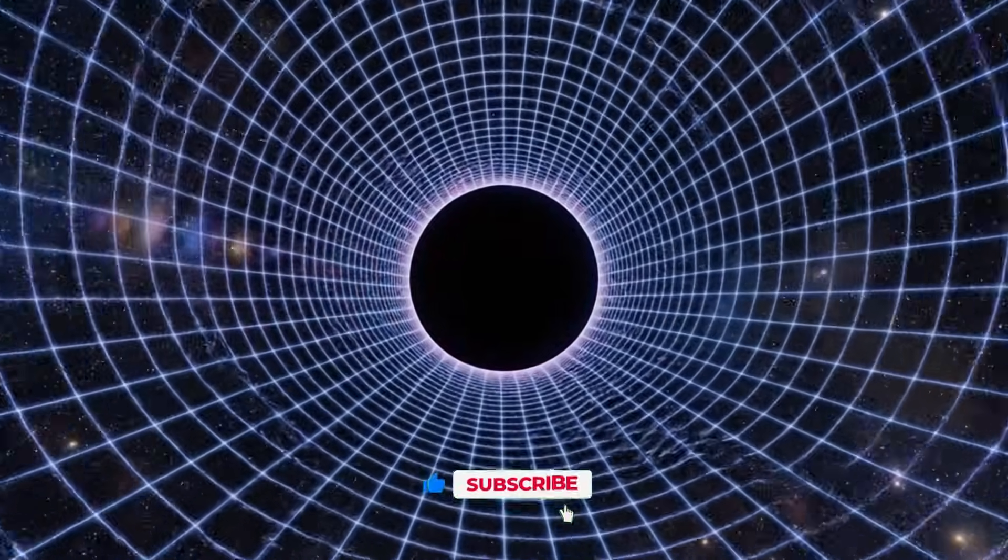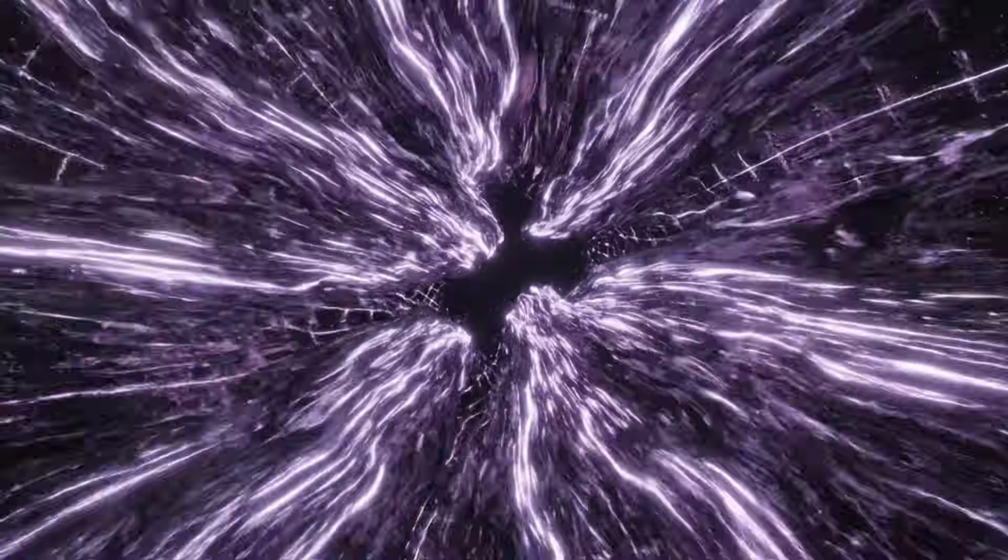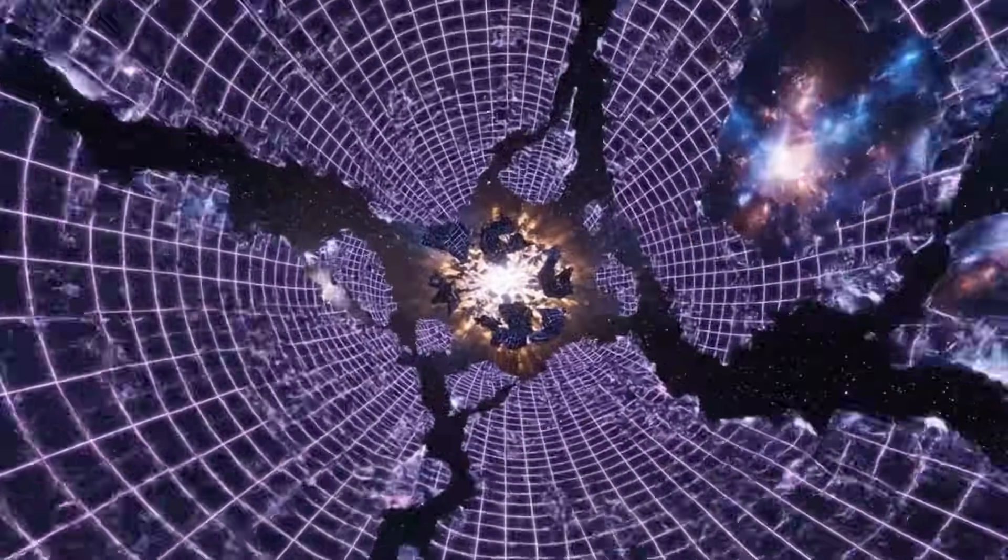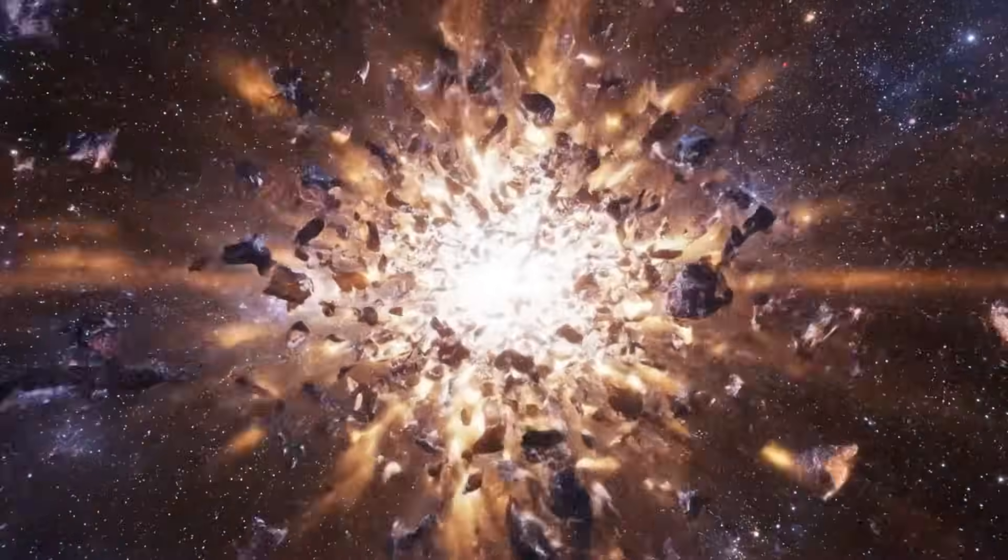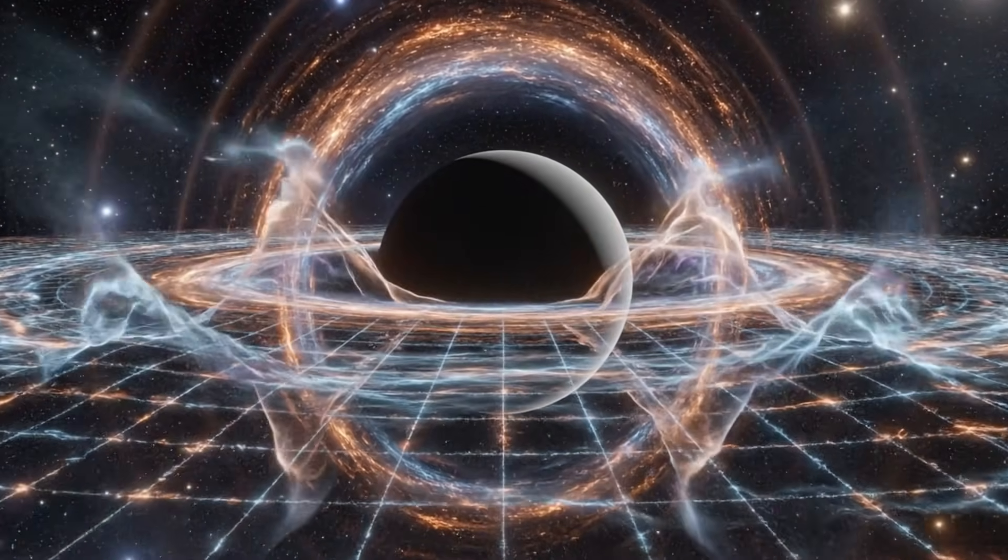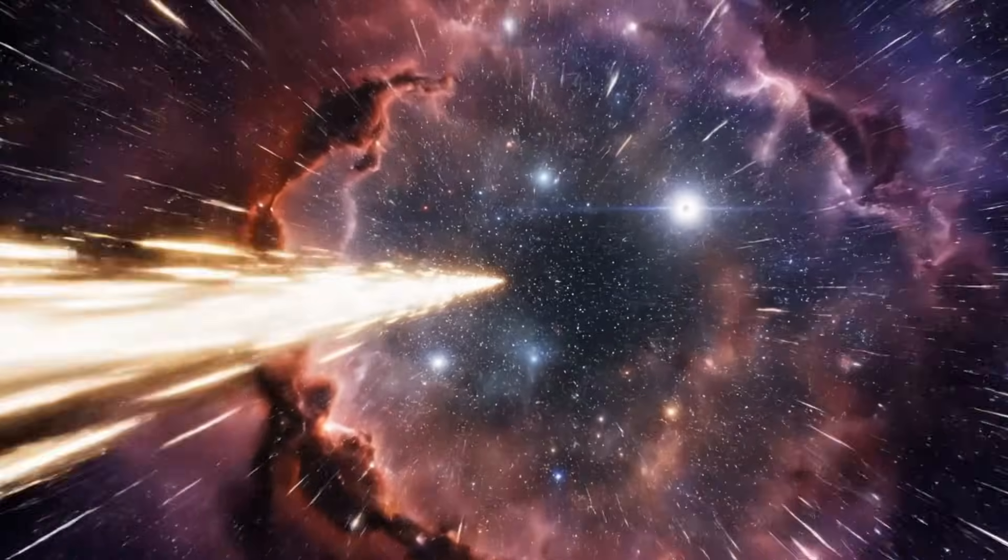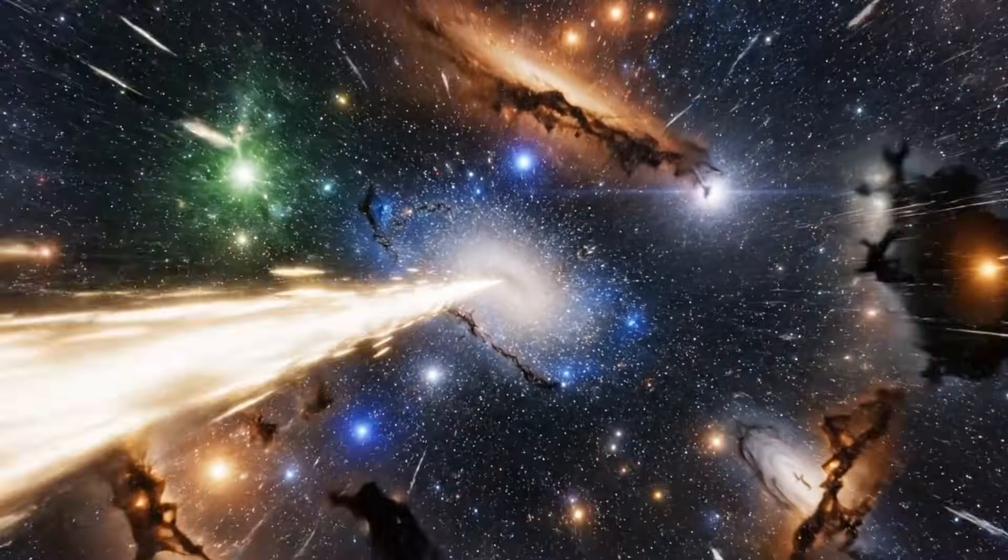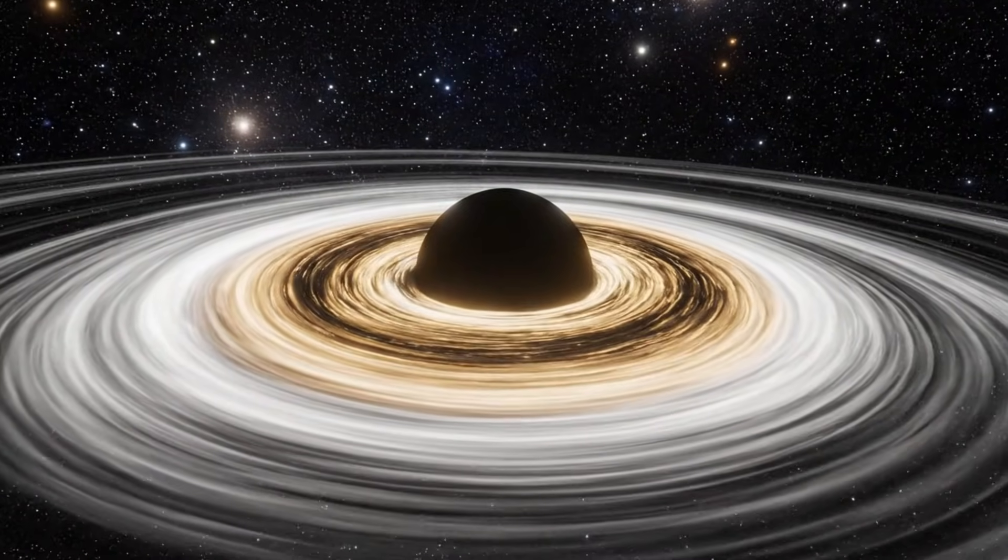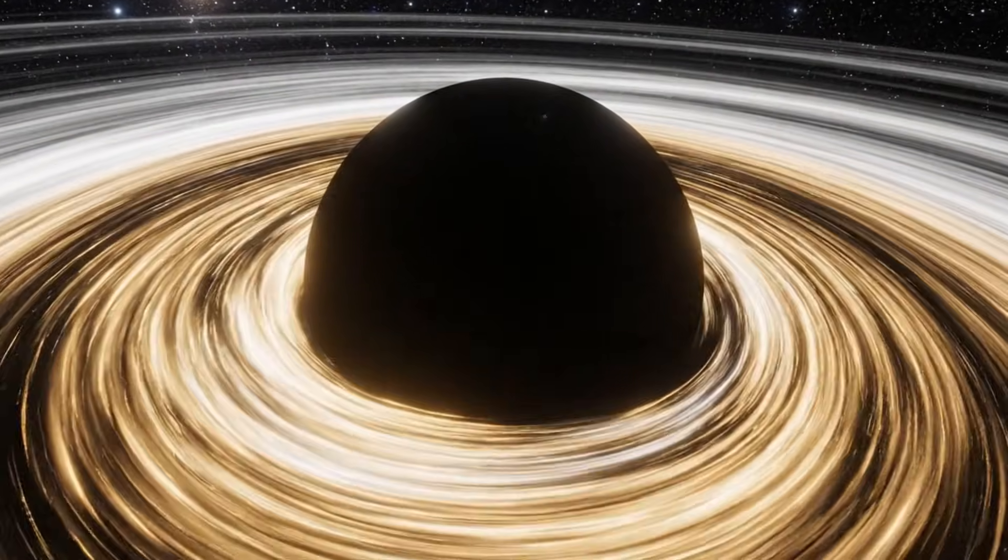The distance from the Sun to Neptune marks the rough edge of our solar system. Multiply that distance more than 40 times and you still only begin to trace the width of this single black hole. It is large enough to swallow our entire planetary system with room to spare, a structure of gravity so immense that space itself collapses inward across a region far larger than anything humanity has ever charted. Thinking about it feels like staring into a void that grows deeper the longer you look. Imagine the entire solar system resting quietly inside the darkness of a single cosmic shadow.